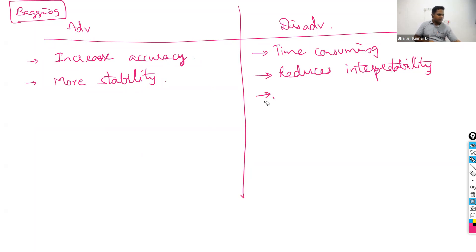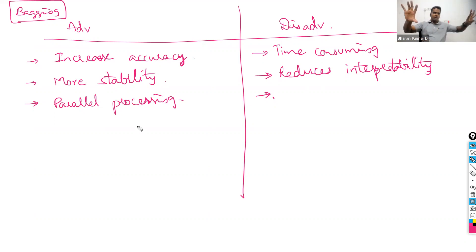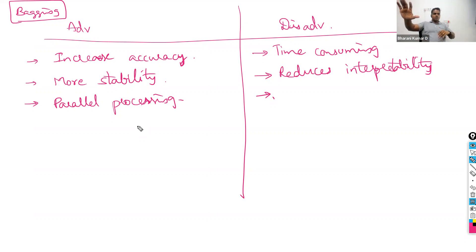One additional advantage is that bagging allows parallel processing because one algorithm versus another has no relationship — the results of the model built are not used for the second model. Different algorithms are built continuously, and since they are independent of each other, you can run those algorithms in parallel. So parallel processing is possible when it comes to bagging.